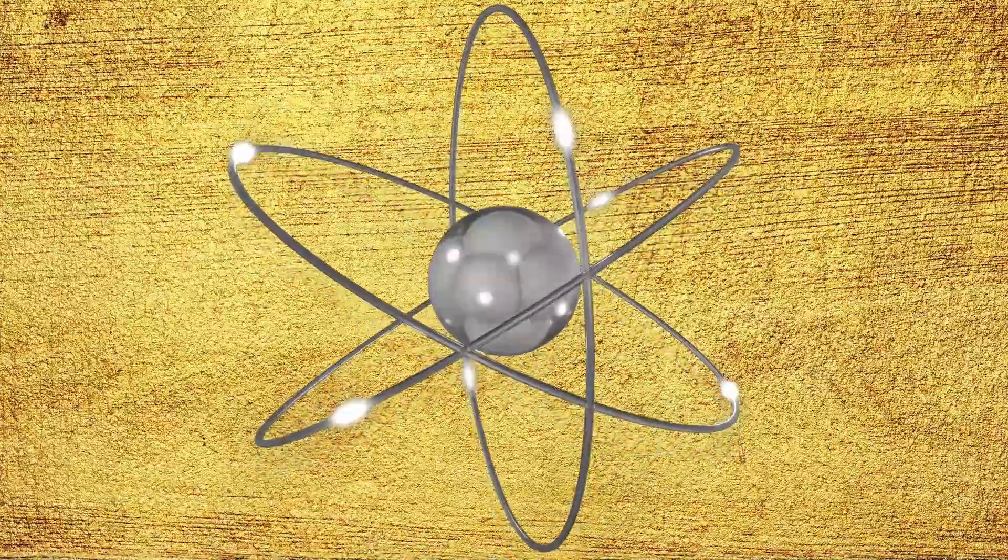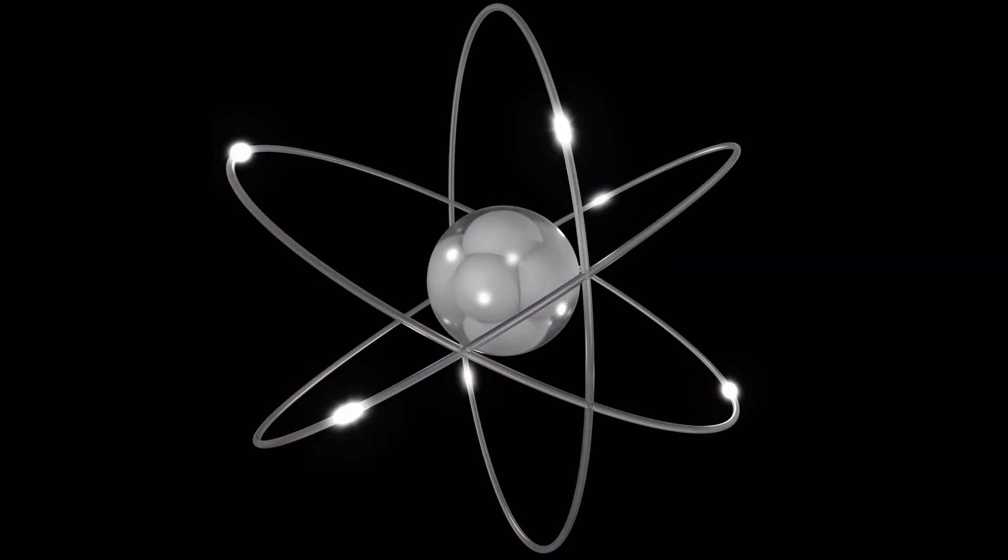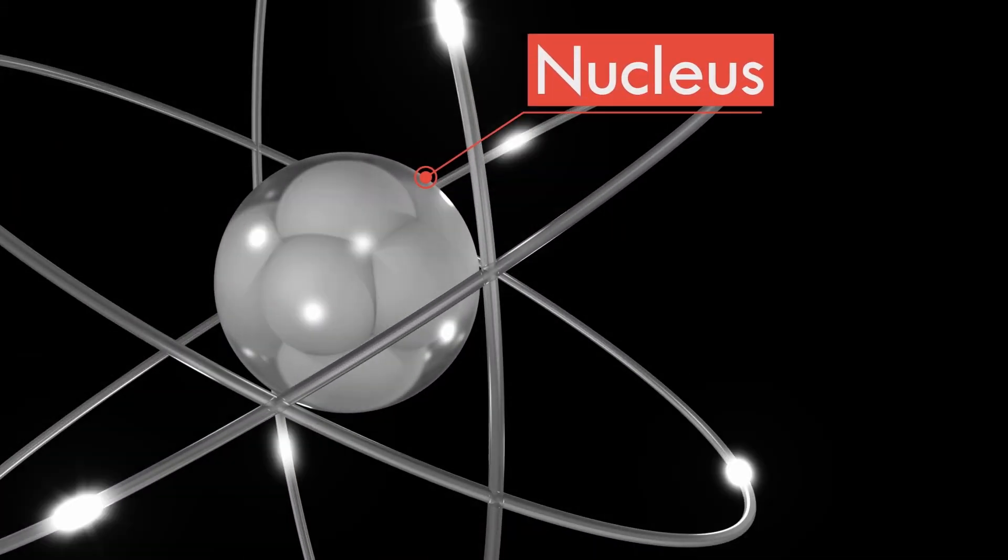When Rutherford, another titan in his field, bombarded a thin piece of gold foil with alpha rays, he discovered that atoms were mostly empty but contained a concentrated positive central charge. He called this center the atom's nucleus and named the positively charged particle protons.